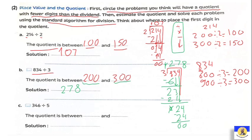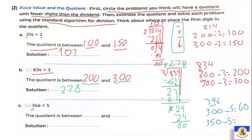Next: 346 divided by 5. Note that 3 here is smaller than 5, so we cannot do 3 divided by 5. For estimation, 346 is between 300 and 350. We can divide both by 5 easily: 300 divided by 5 equals 60, and 350 divided by 5 equals 70. So the quotient will be between 60 and 70.